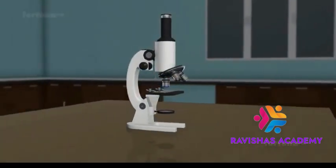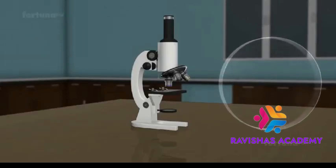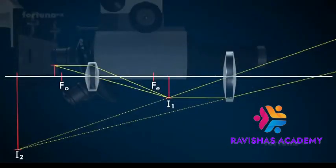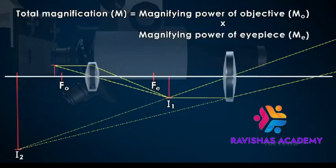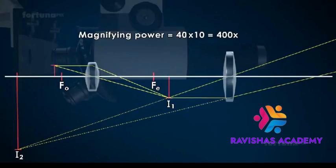Magnification of the compound microscope. The magnifying power of a lens is expressed in diameters. A lens magnifying an object 5 times has a magnification of 5 diameters and is written as 5X. The total magnification of a compound microscope is the product of the magnifying power of the objective and the magnifying power of the eyepiece. For example, if the objective has a magnification of 40X and that of the eyepiece is 10X, then the magnifying power of the microscope is 400X.